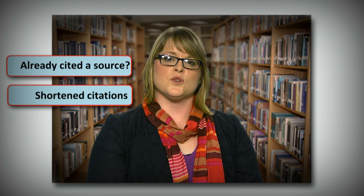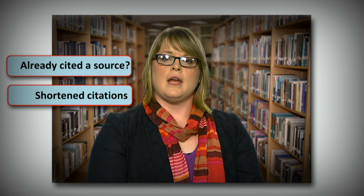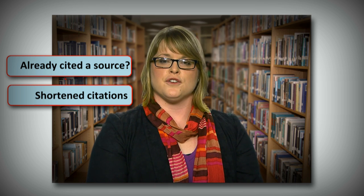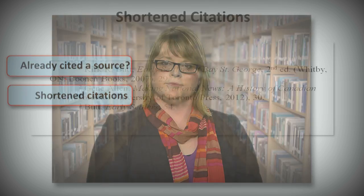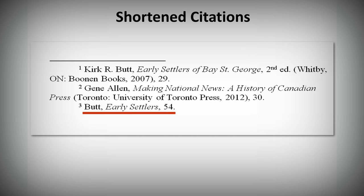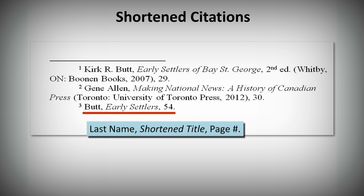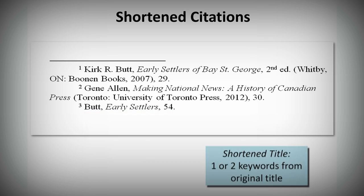If you've already cited a source once and you need to cite it again, you can use a shortened citation in your footnote. For a shortened citation, you need only to include the author's last name, a shortened title, and the page number. If your title is five or more words long, use a shortened title. A shortened title uses only one or two keywords from the original title.